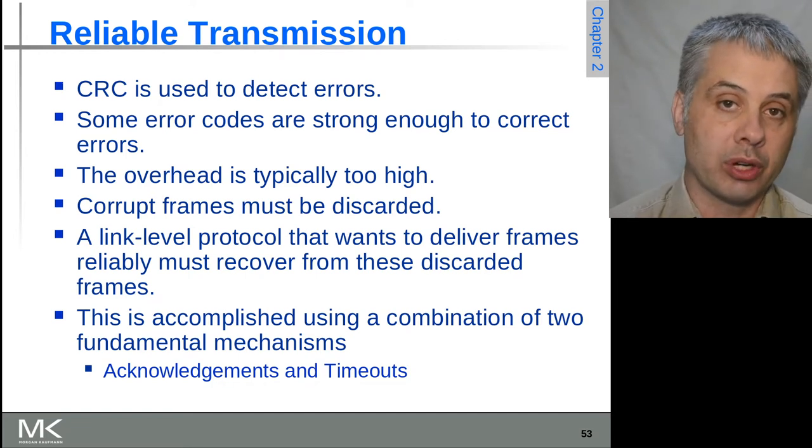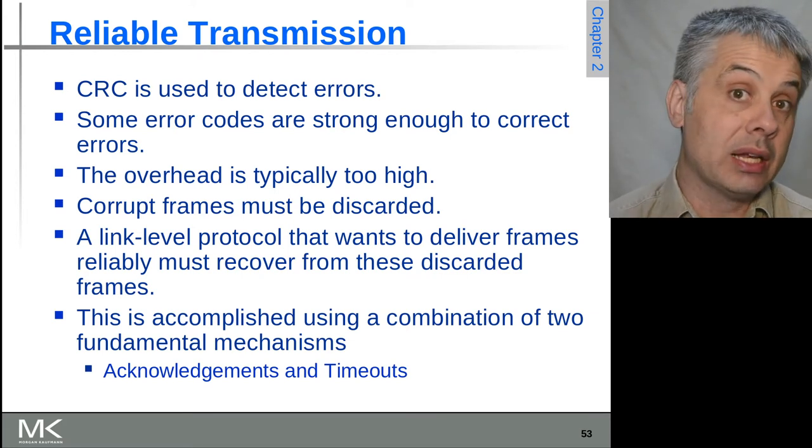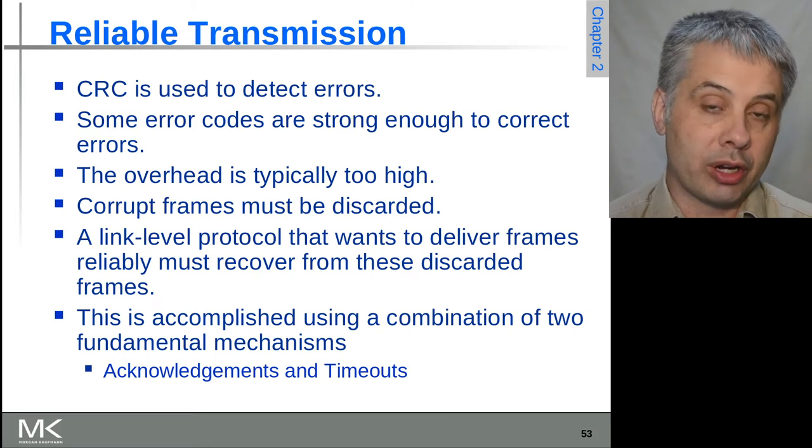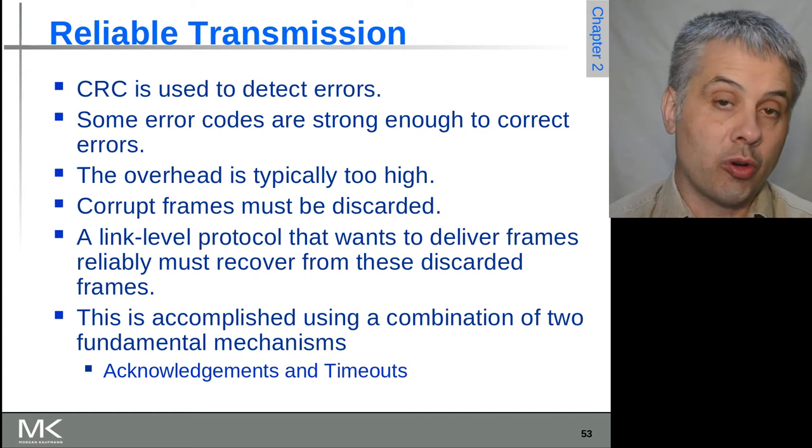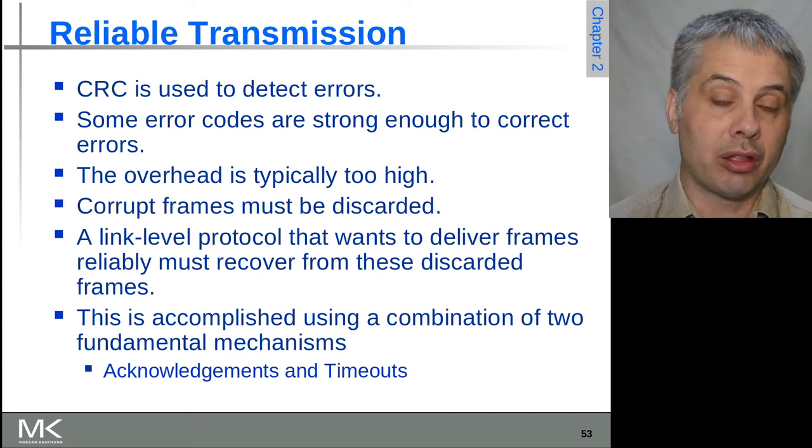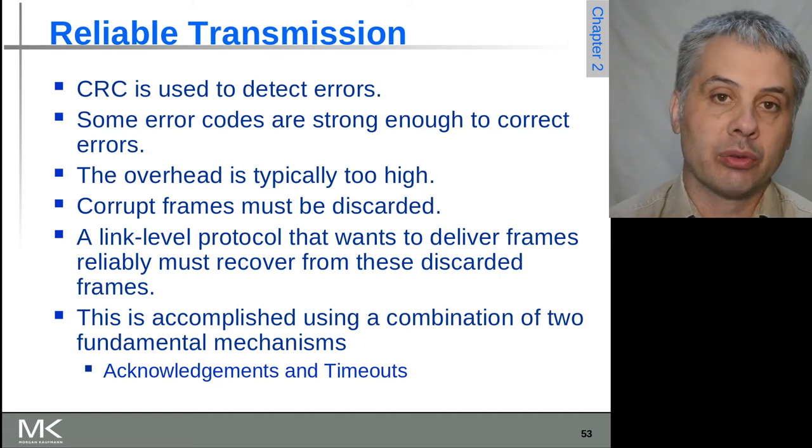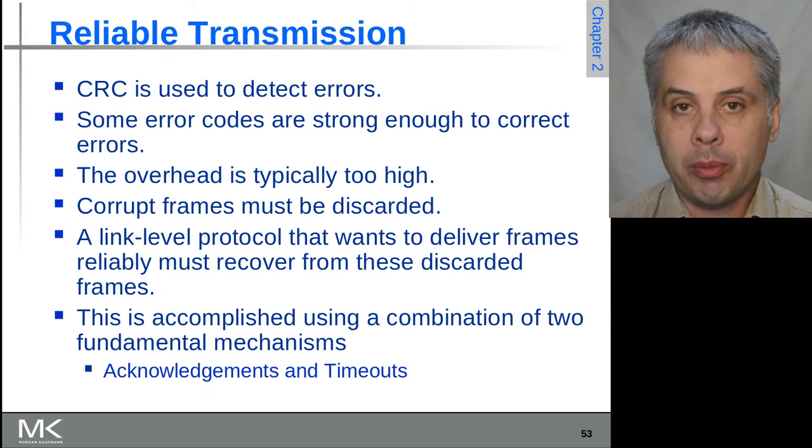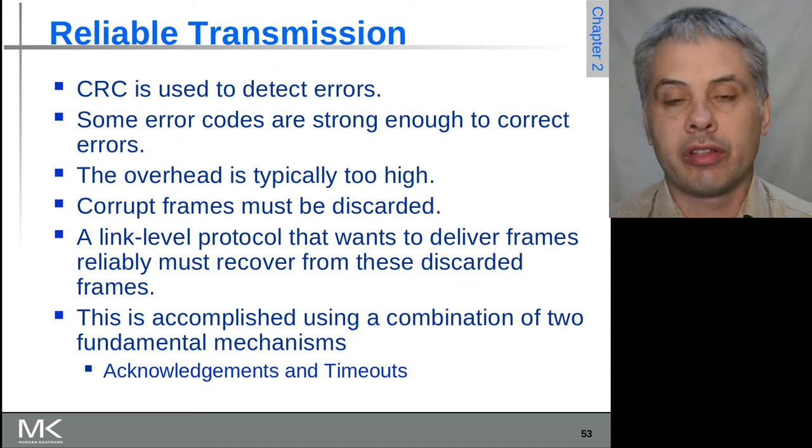If this is only happening once in every thousand or once in every million times, the cost of retransmission is very low. You can get away with using a four byte CRC on a one and a half kilobyte standard Ethernet frame to provide robust error correction. In the same environment, it would probably require using about 20% overhead.